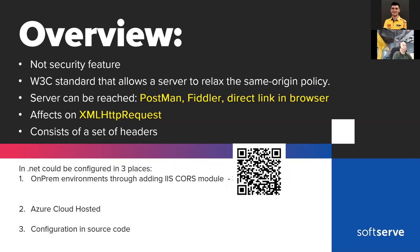CORS is a W3C standard that allows a server to relax the same-origin policy based on headers. It affects not only XMLHttpRequests made from JavaScript, but also Fetch — the standard that W3C refers to and which the WHATWG Fetch specification describes. So as previously mentioned, we will talk about CORS configuration in three different places in .NET.